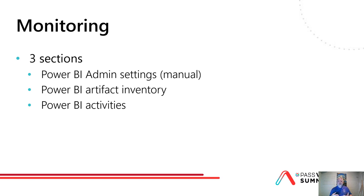In this session, I suggest three sections of monitoring. I suggest that you monitor the Power BI admin settings, which you find in the admin portal typically under the tenant settings. I suggest that you monitor the Power BI artifact inventory — basically create an inventory of what you have in your tenant. And I also suggest that you monitor the activities: who is doing what, when. These are the minimum I suggest. Of course, there might be other things you want to monitor — for example, if you have Power BI Premium, you want to monitor the capacities, and if you have an on-premise gateway, you want to monitor that.